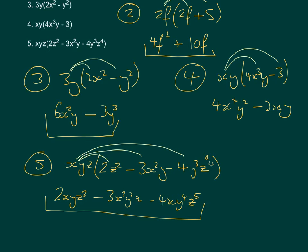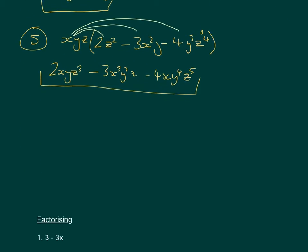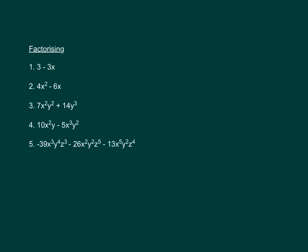We're now going to look at how we would factorise — essentially going backwards. If we're given an expanded expression, what do we do to get back to bracket form? I've prepared a few questions of escalating difficulty.